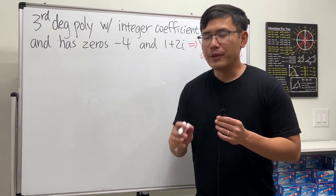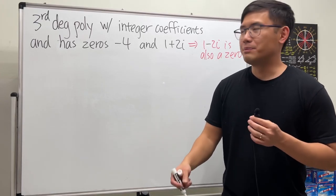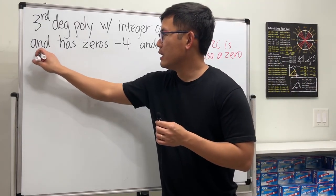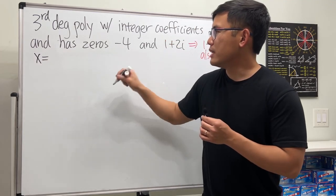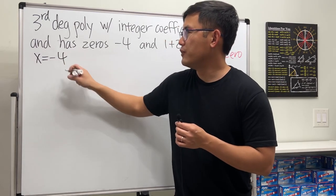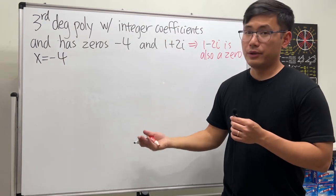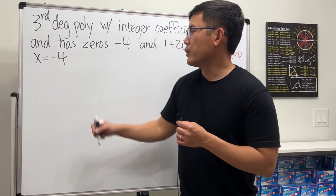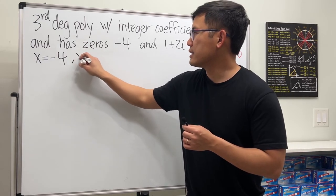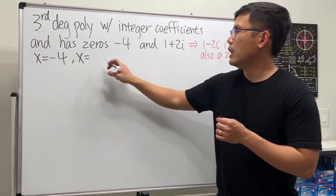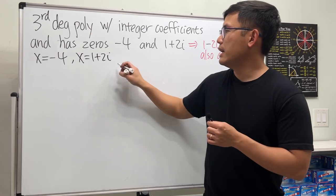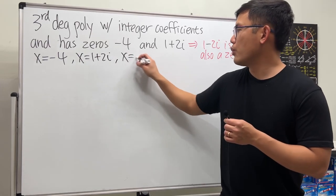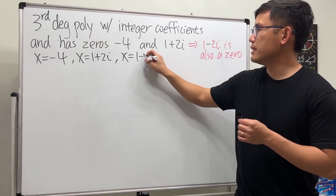Now let's do the algebra. We're going to work backwards. We have zeros at x = -4, and the other one is x = 1+2i, and one more x = 1-2i.